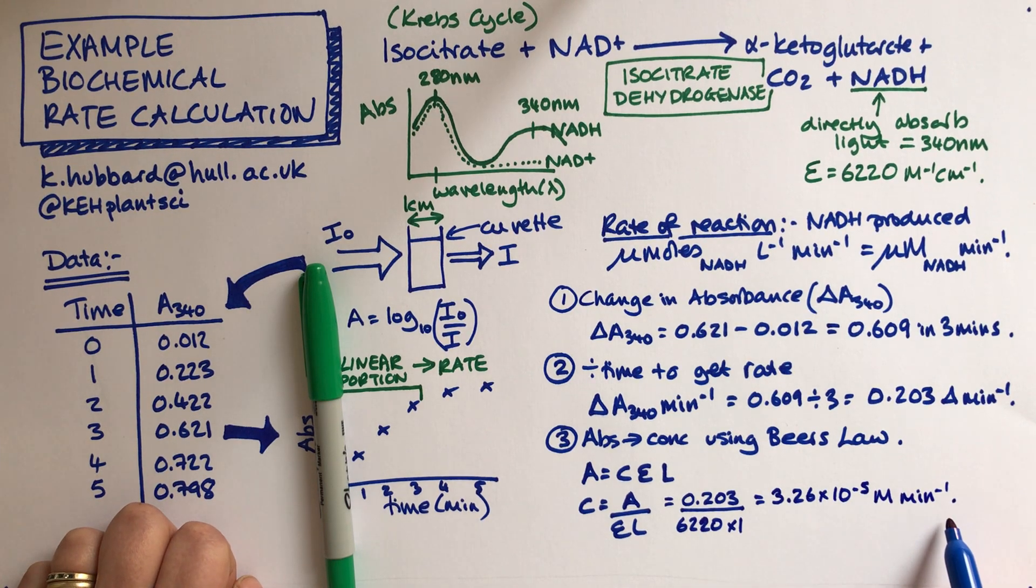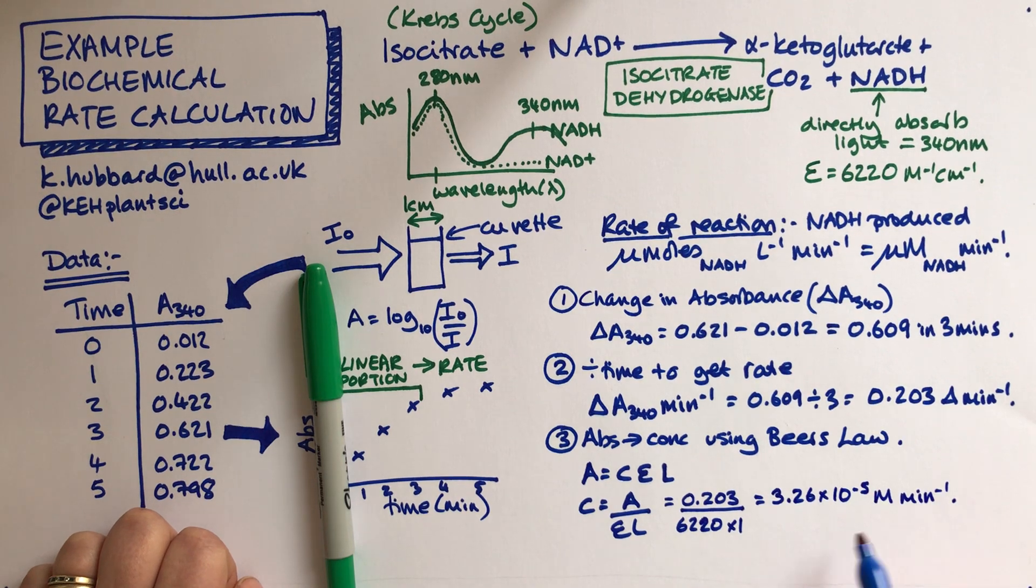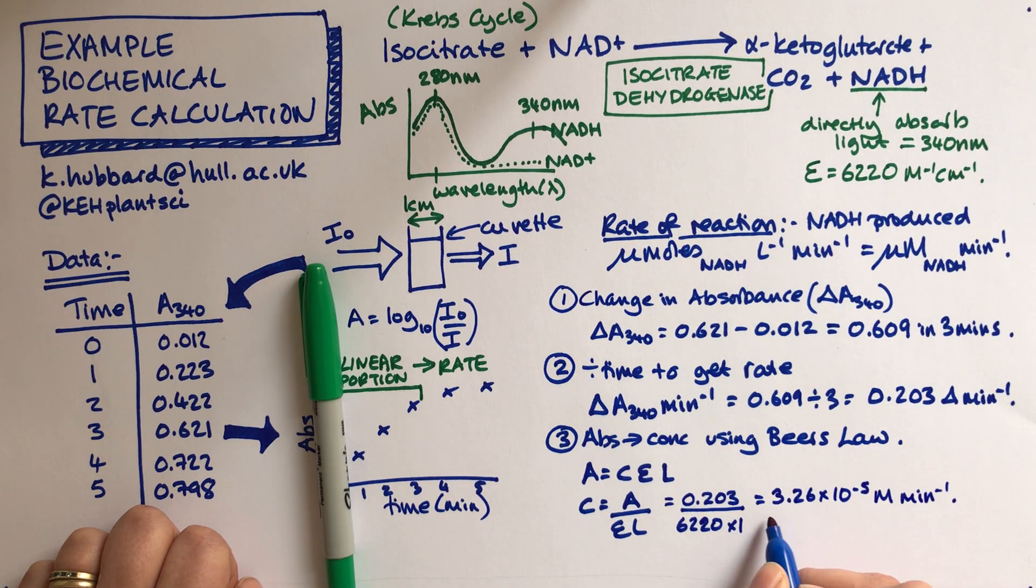Which is just a slightly funny unit to leave it in. So what we usually do is to convert that to micromoles. So that is the same thing as 32.6 micromoles per minute.